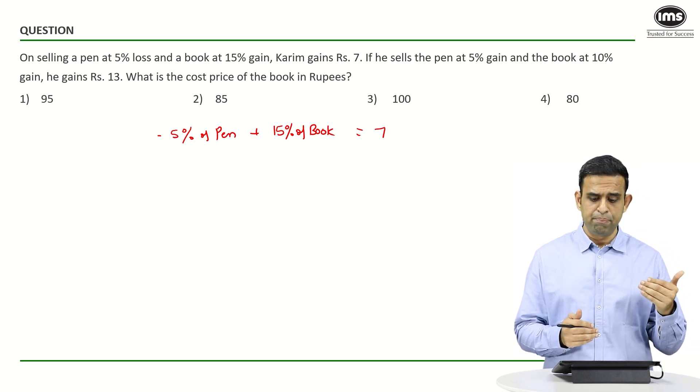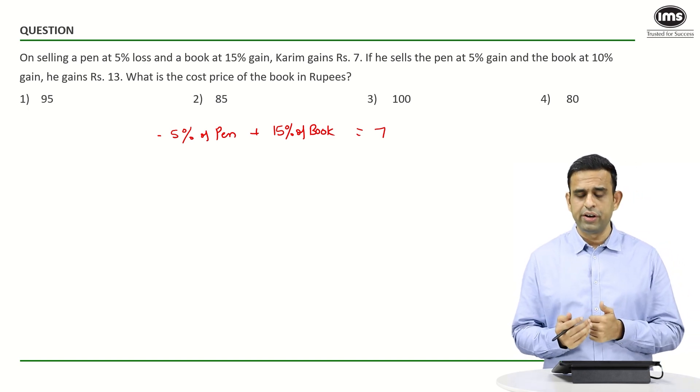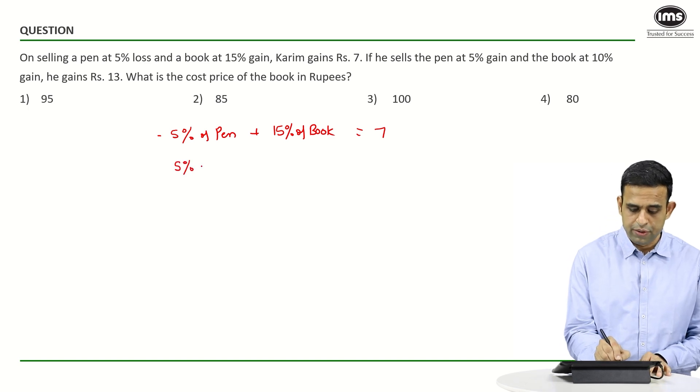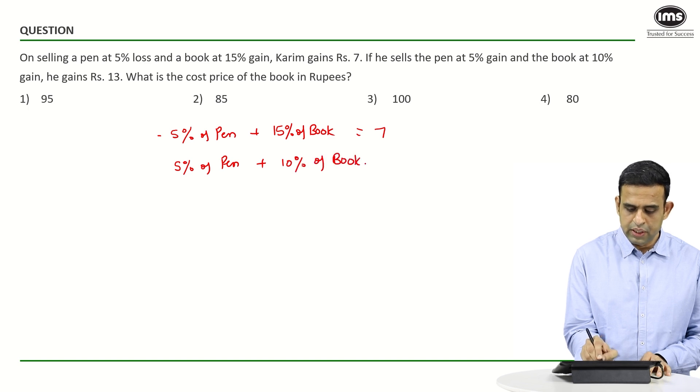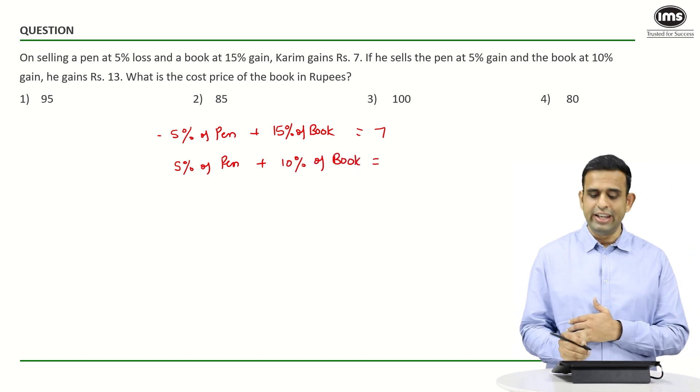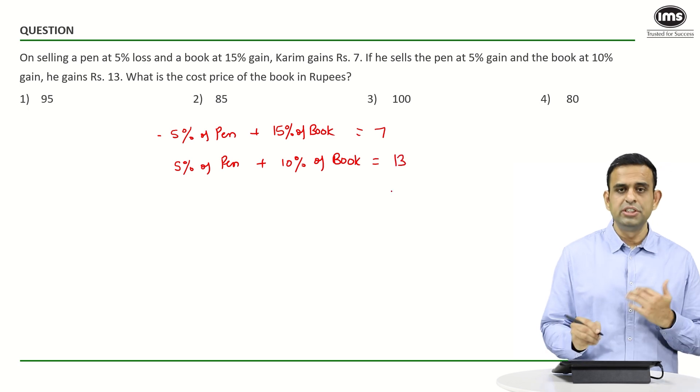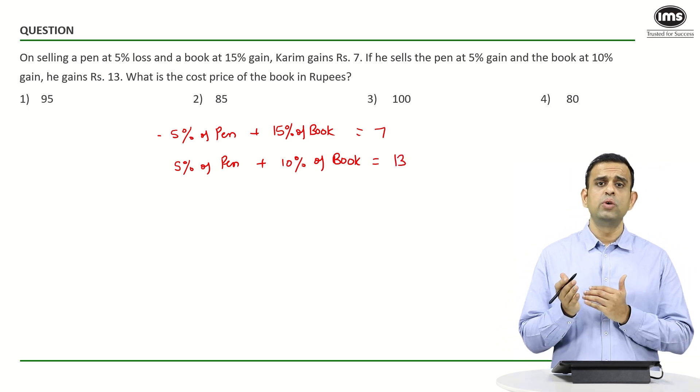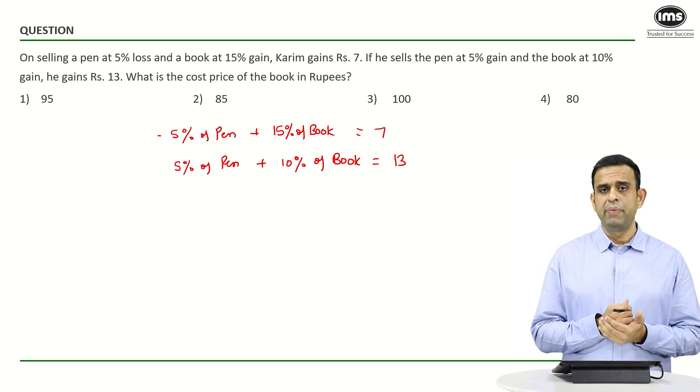In the second statement, it is given that I am selling the pen and the book both at profit. So my profit has to be 5% of pen and 10% of book, and this must be equal to 13. Since I need to find out the cost price of the book, my target has to be to eliminate the pen part.